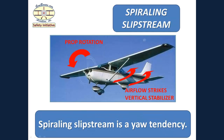Spiraling slipstream is a yaw tendency, and also operates whenever the propeller is turning. As the air leaves the propeller, it spirals under the wing, whether the airplane is a high wing or low wing design, and strikes the left side of the vertical stabilizer, or tail, causing the nose to yaw toward the left.